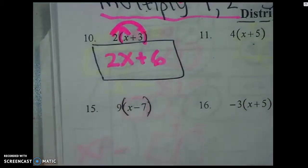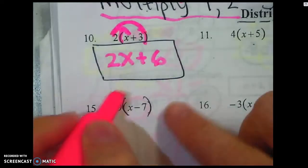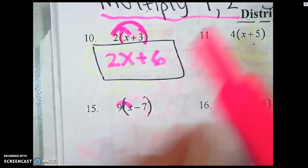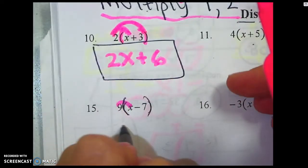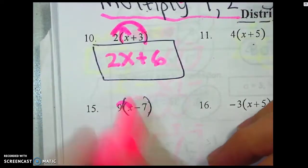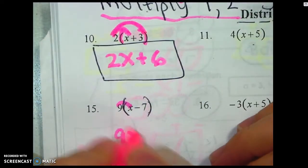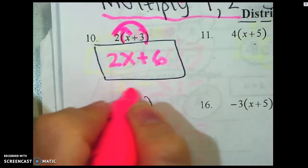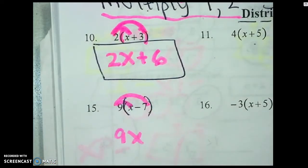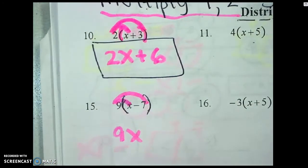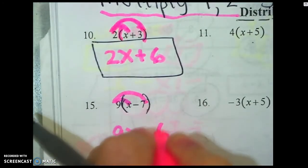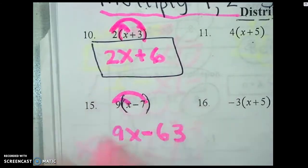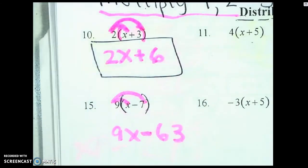Let's try the next one. I see parentheses — parentheses mean give. Nine times x is nine x. Give again: nine times seven is 63. Bring down the minus.